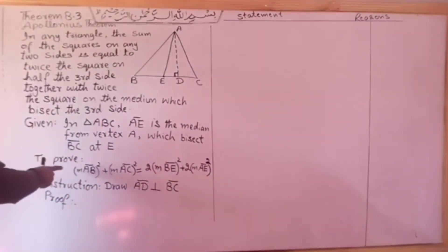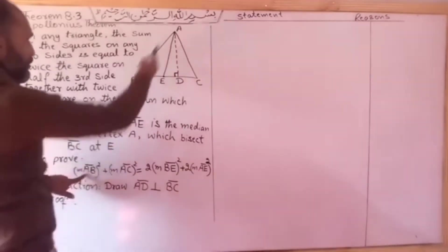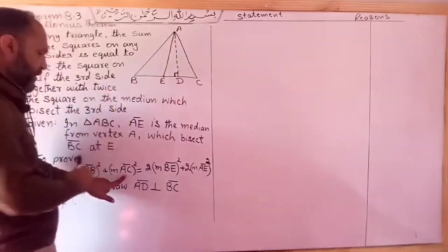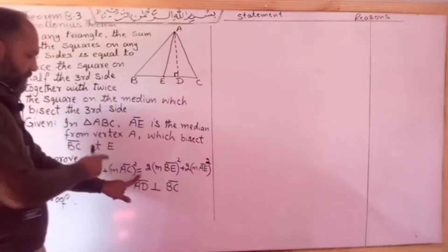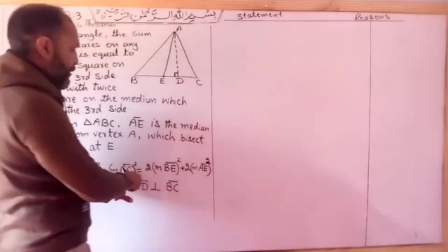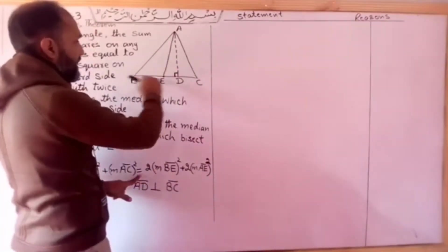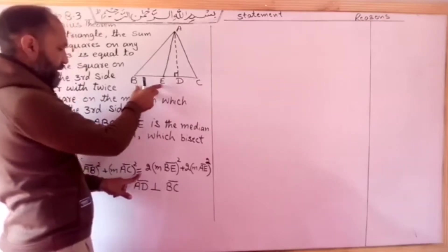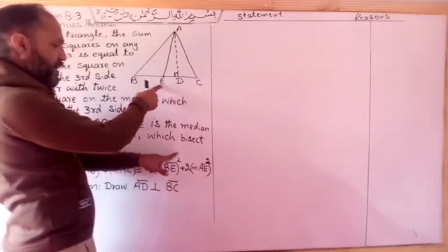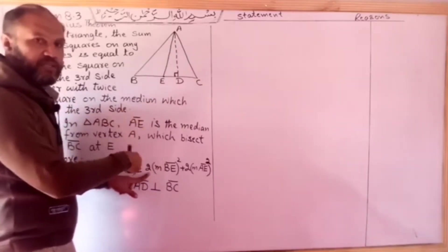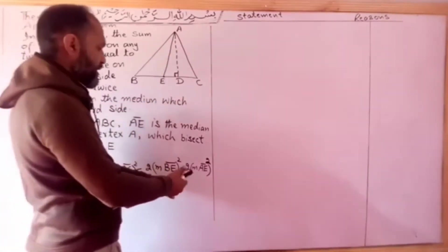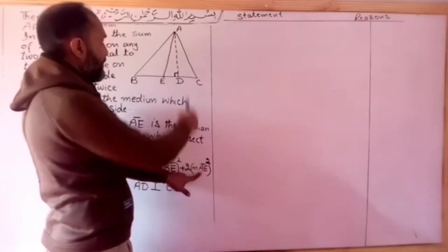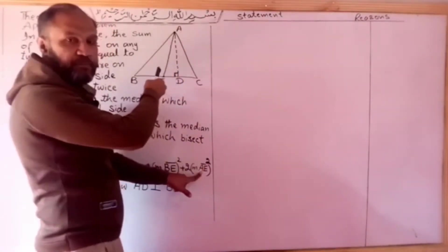We have to prove that AB squared plus AC squared is equal to twice the square on half of BC, plus twice the square on the median AE.